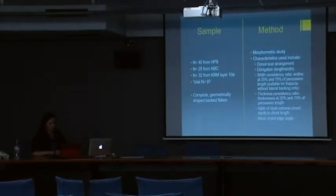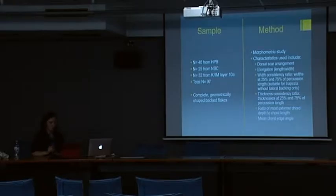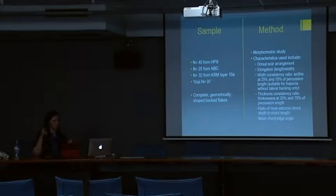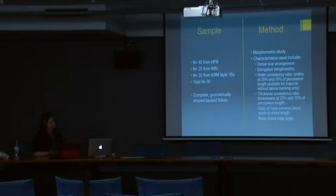To answer my research questions, I chose to use relative shape characteristics — mostly ratios of pairs of attributes — to remove the effects of size from the results. I'm focusing on characteristics of the backed artefacts which retain original blank information and haven't been changed by napping: dorsal scar arrangement, axial elongation (ratios of width at 25% and 75%, and thickness at 25% and 75%), a ratio of most extreme chord depth to chord length, and mean chord edge angle, because that's universal across persons.